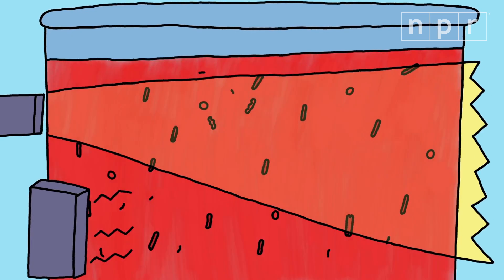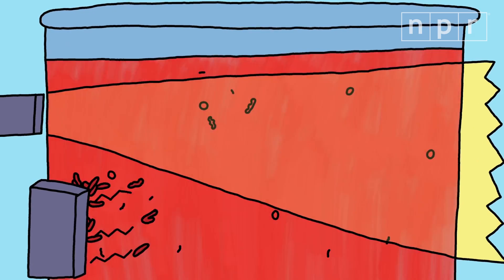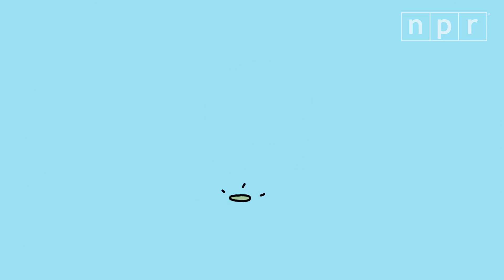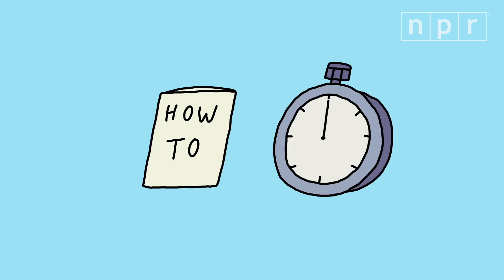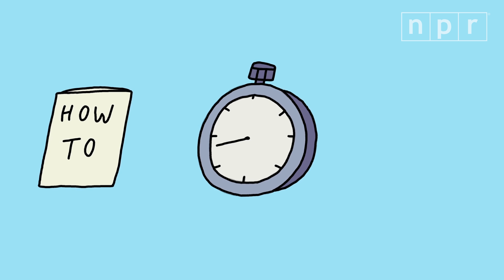And if there are parasites, the hemozoin will move toward the magnet, and more light should get through. We think we can make our device cheap and easy to use, and that's perfect for low resource settings. Being able to diagnose people quickly and easily should help stop the spread of malaria.